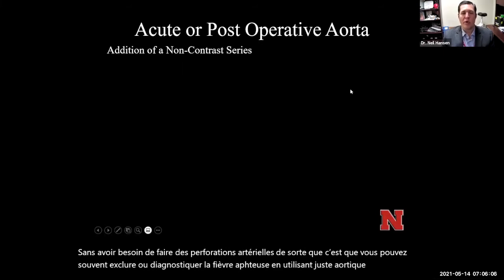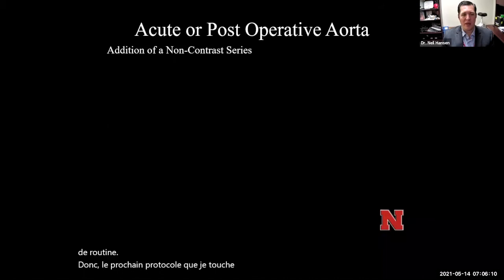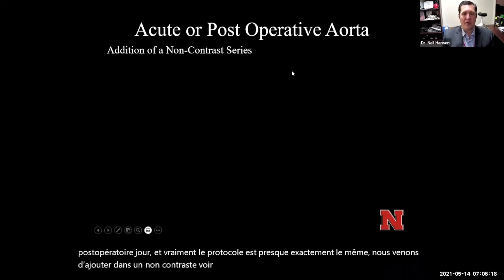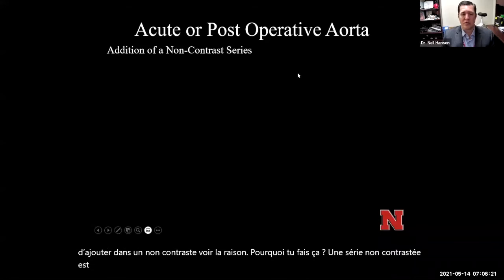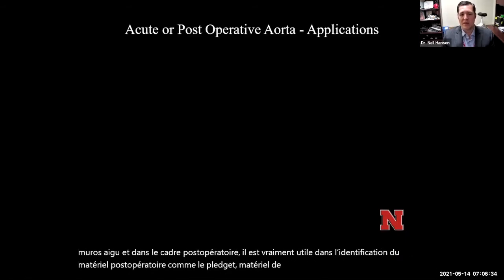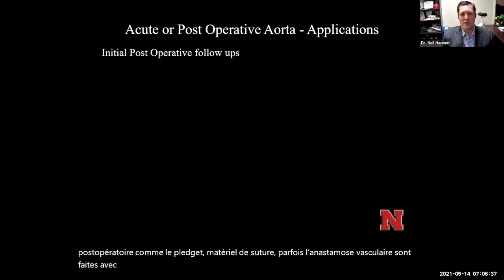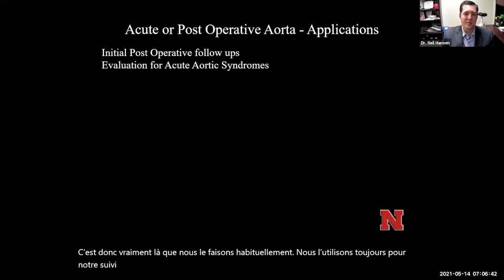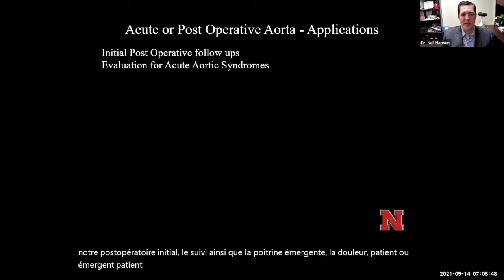The next protocol is the acute or post-operative aorta. The protocol is almost exactly the same, but we add in a non-contrast series. A non-contrast series is really helpful in the acute aortic setting to look for an acute intramural hematoma. In the post-operative setting, it's helpful for identifying post-operative material like pledgets and suture material — sometimes vascular anastomoses are done with felt material that is hyperdense on CT. We always use it for our initial post-operative follow-up, as well as for the emergent chest pain or abdominal pain patient suspected to have an acute aortic syndrome.